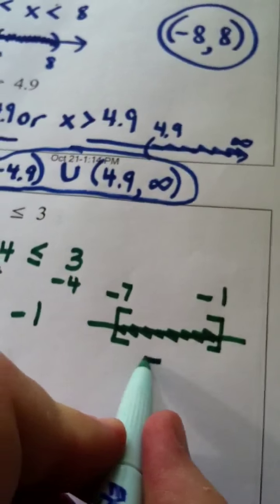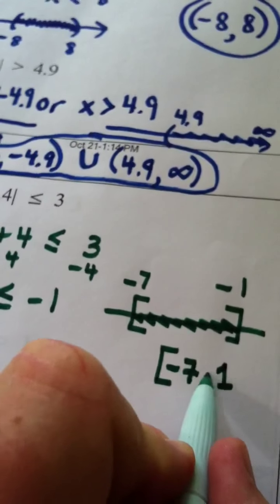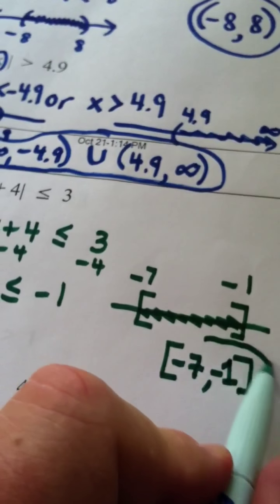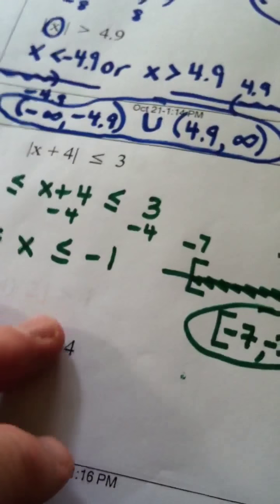So in interval notation, my answer would be bracket negative 7, comma, negative 1, with another bracket, and we're done with that one.